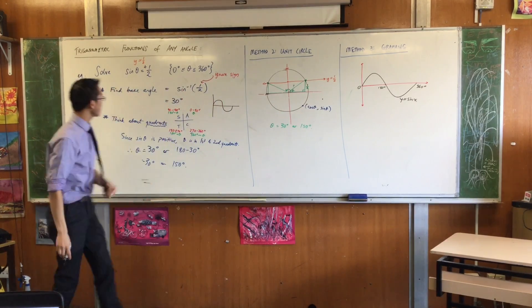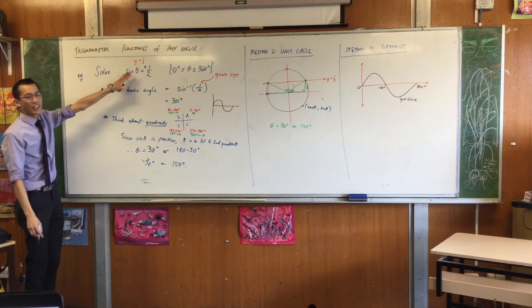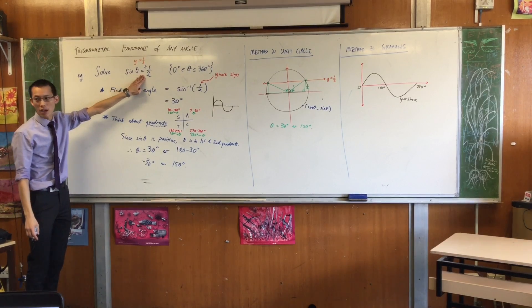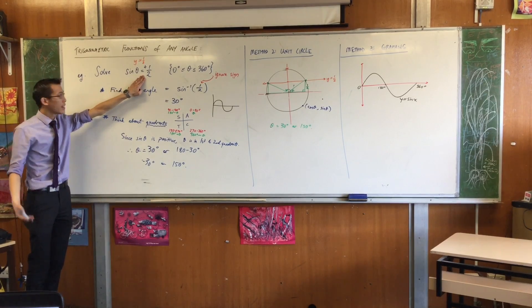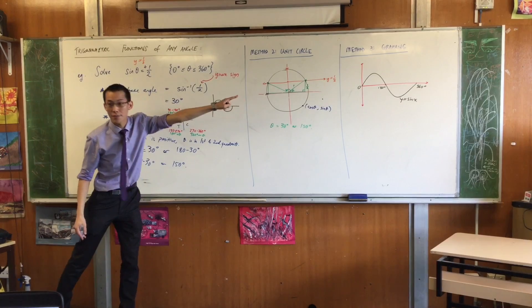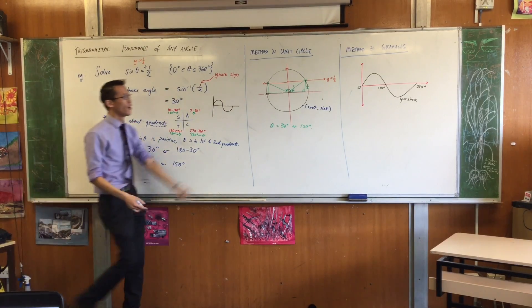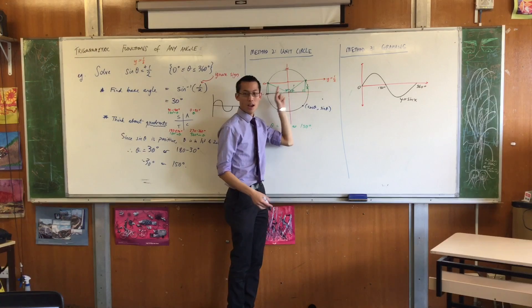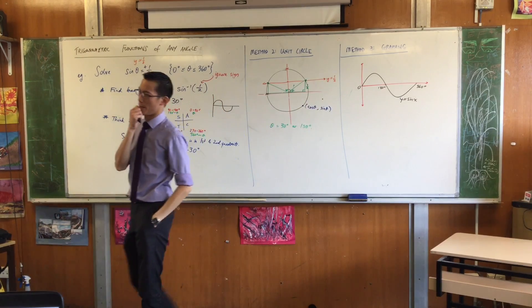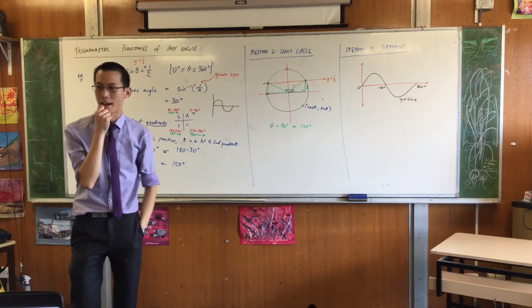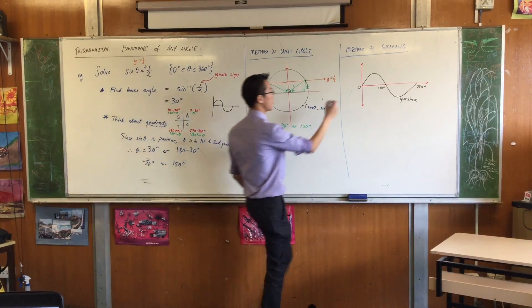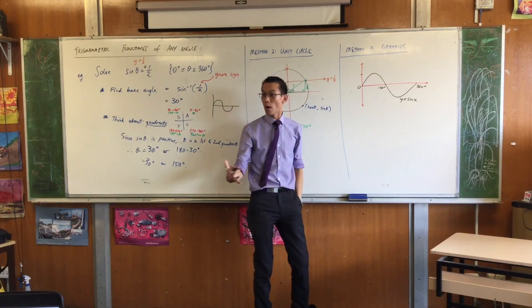All right, so that's what the graph looks like. Now, if you're asking sine theta equals a half, what you're really asking is, when does that graph intersect with this one? So just like before, I'm going to draw y equals a half on here. Now, think for a moment. What's the highest sine goes? What's this value up here? It's 1, isn't it?